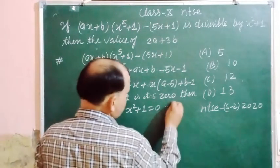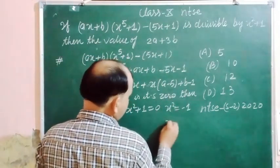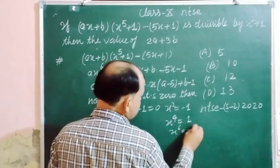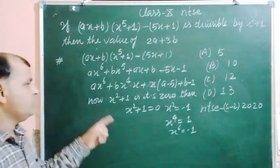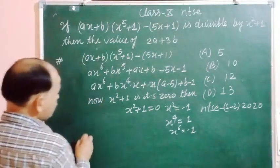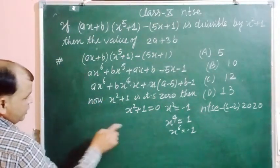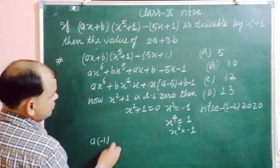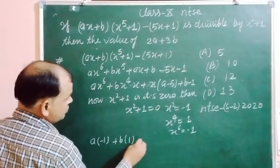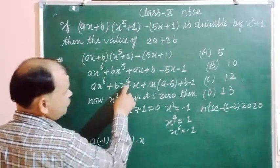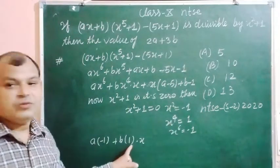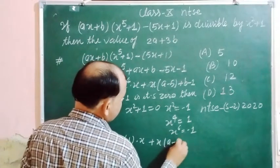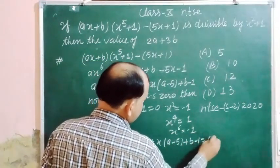Since X⁵ + 1 is the divisor, we put x = -1, so x⁶ equals 1. We substitute here and the expression becomes equal to zero. So A×(−1)⁶ gives A, and B×(−1)⁵ gives −B. Then 1 plus x times (A minus 5) plus (B minus 1) equals zero.